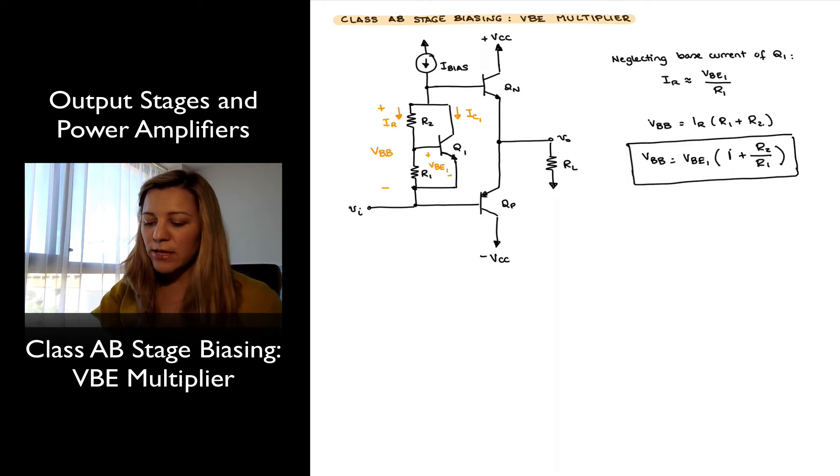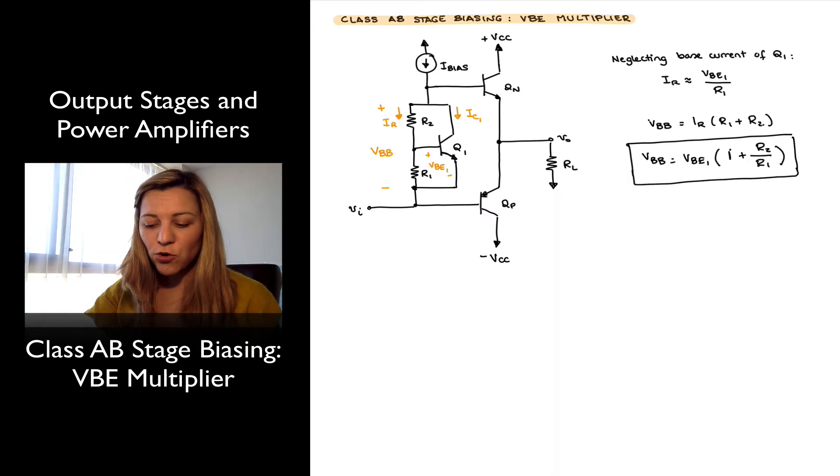The reason for that is, notice that even if we had the worst case scenario where QN is sourcing the maximum amount of current to the load, and therefore the base of transistor QN is drawing a lot of that bias current I-bias, that is going to make the collector current through Q1 decrease as a lot of the bias current is now being fed into the base of QN.